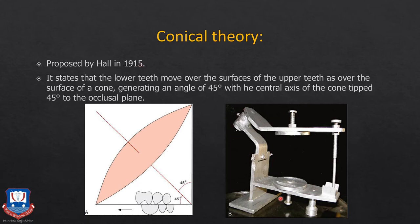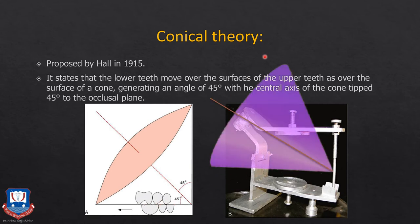The third theory was the conical theory given by Hall in 1915. Hall stated that the lower teeth — the occlusal and incisal surfaces — move over the surface of the upper teeth as if moving over the surface of a cone generating a 45-degree angle with the central axis of its body, with the cone tipped at 45 degrees horizontal to the occlusal plane. This is Hall's articulator based on the conical theory.